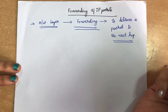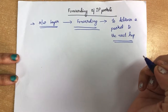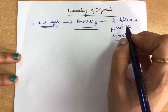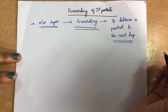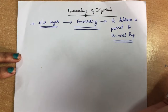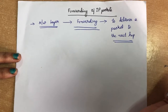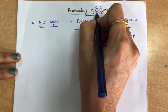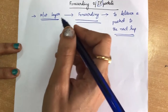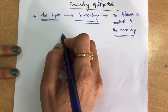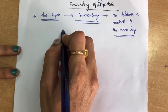We are going to see how forwarding is done with the help of IP packets. We have already discussed in earlier units that forwarding places the packet on its route to its destination. Now we are going to include IP — internet protocol — while doing this forwarding, and see how IP protocol helps in forwarding.